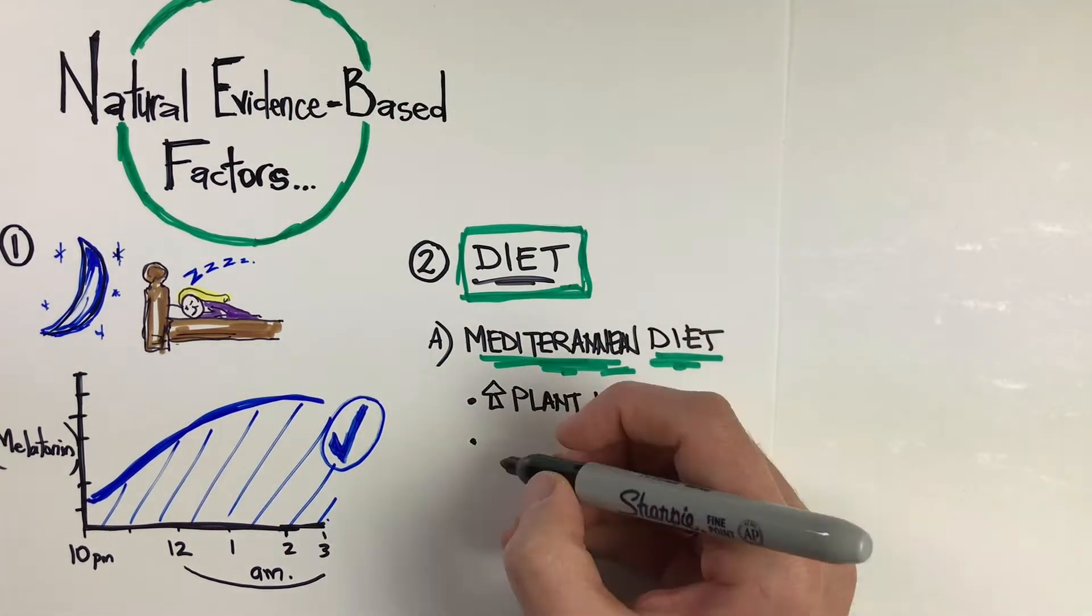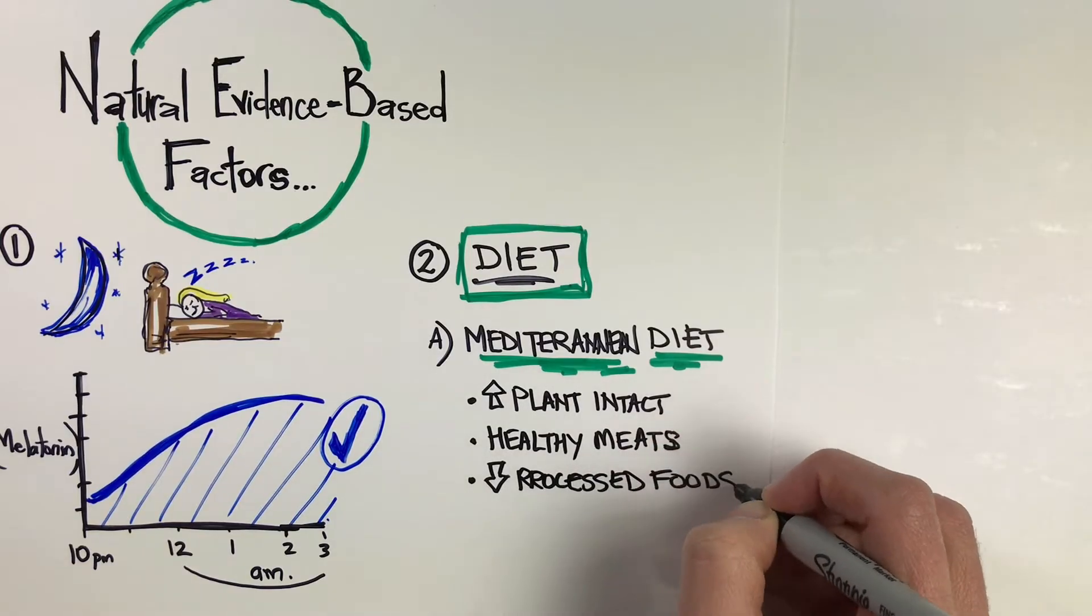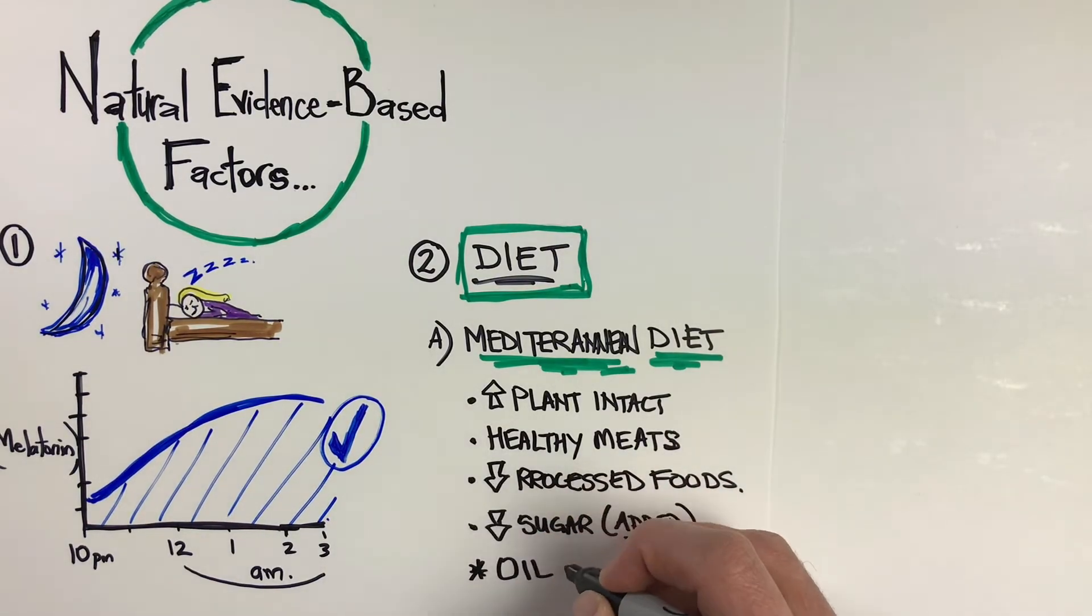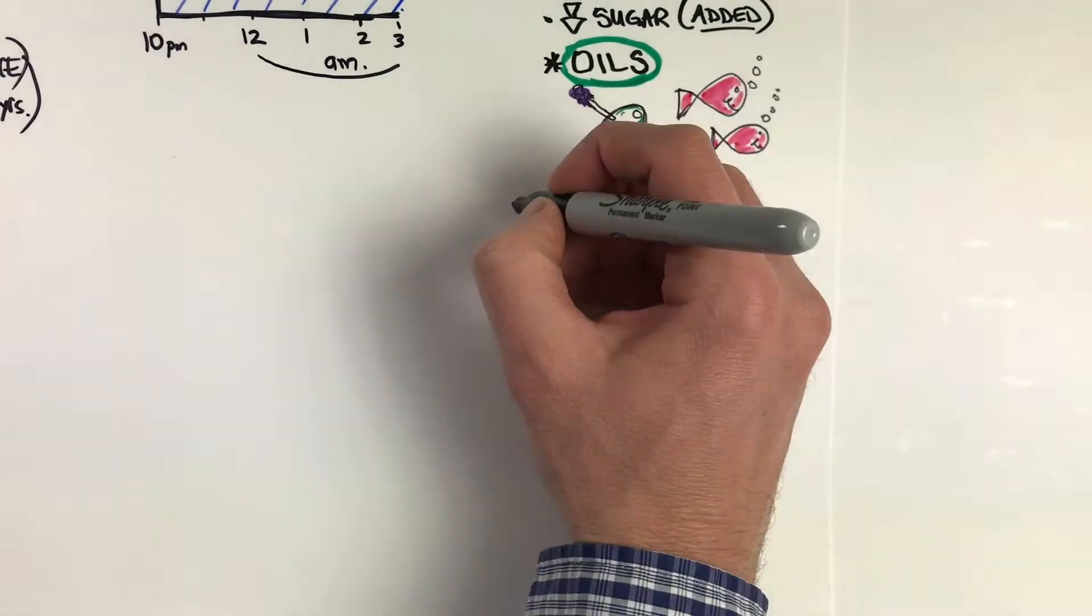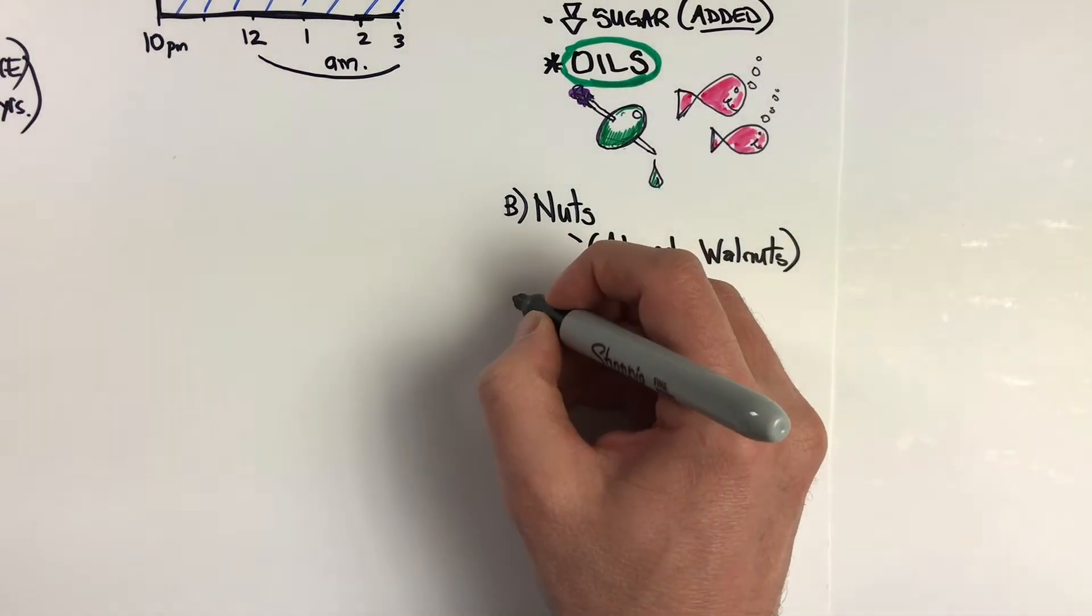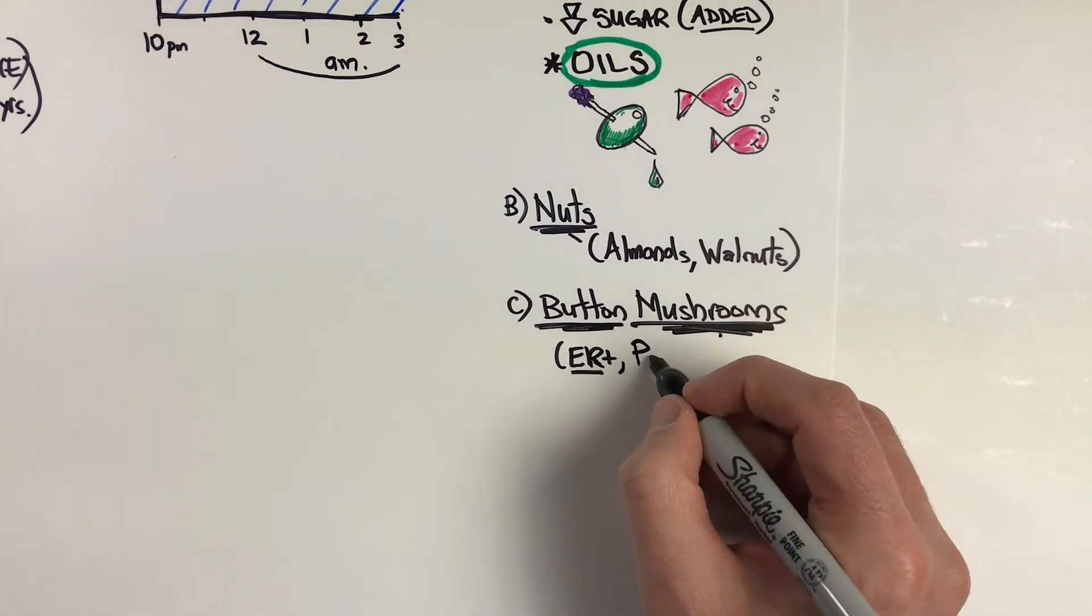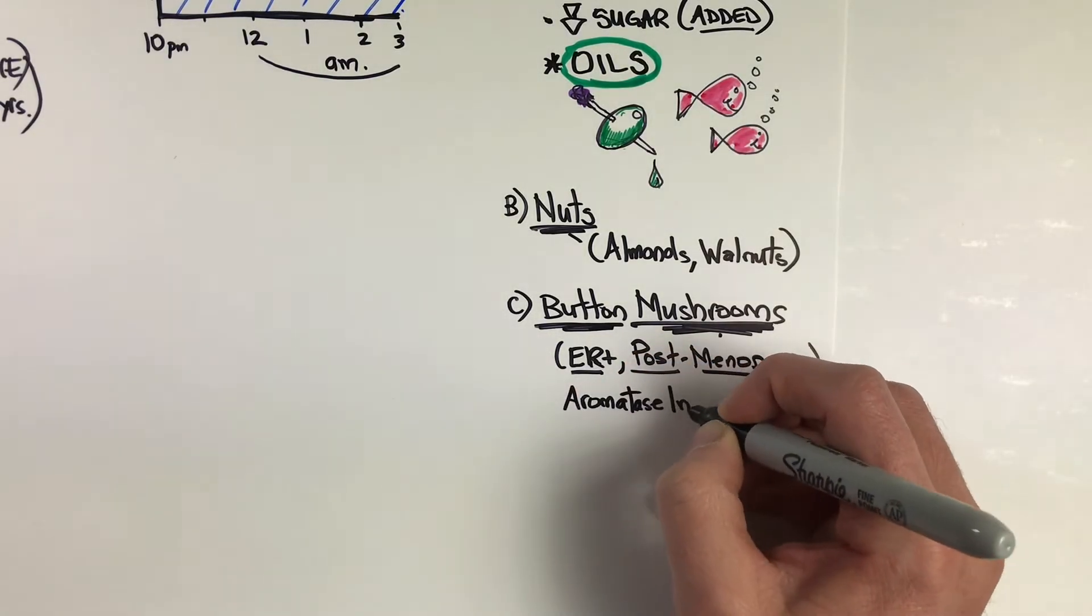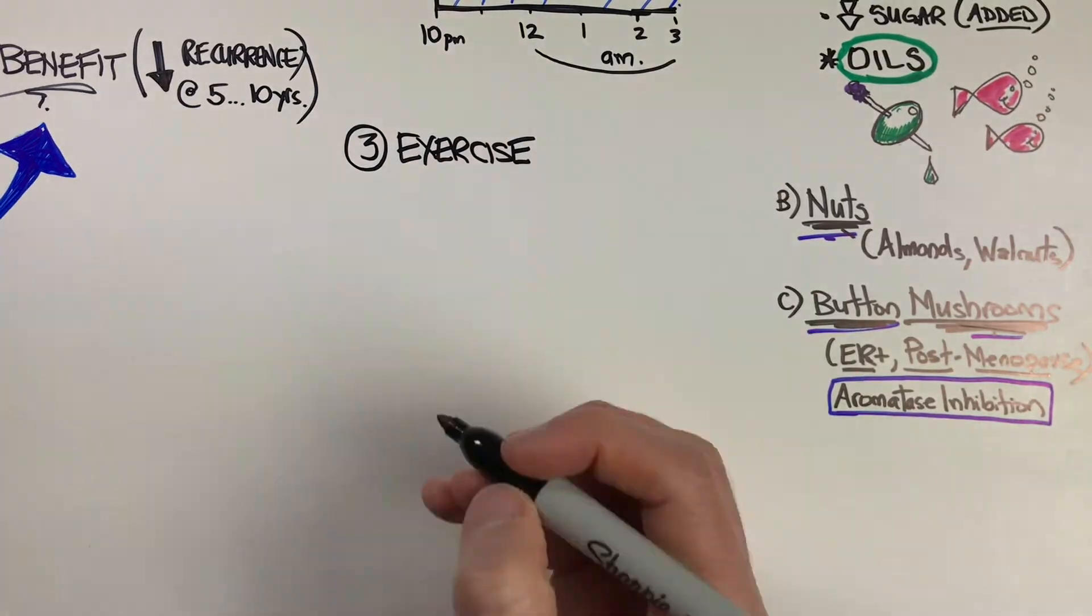Diet is another piece. The number one approach is the Mediterranean diet. The virtues include high plant life eating, healthy meats selected over processed foods and unhealthy meats, decreased excess sugar intake. Probably the greatest virtue of the Mediterranean diet is the oils, anti-inflammatory oils coming from olives and fish. Nuts, almonds and walnuts, have been established to decrease incidence of breast cancer. Mushrooms have been established as delivering anti-cancer benefit in estrogen receptor positive, particularly post-menopausal cases, where they have the activity of aromatase inhibition, acting much like aromatase inhibitors.